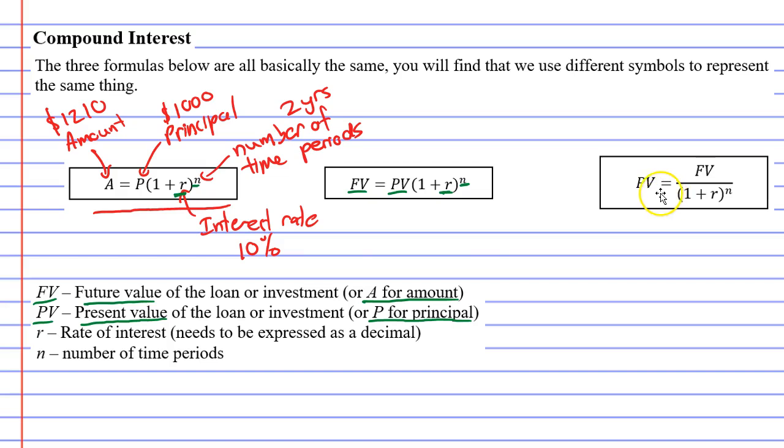The last formula we're going to look at, you'll notice, is a rearrangement of the formula in the middle. And we use this one when we're trying to find the present value, which is the same as the principal, rather than finding the future value, which is the same as the amount.